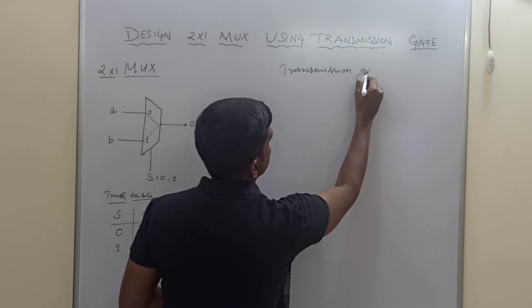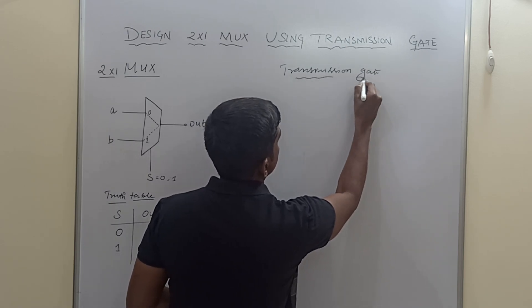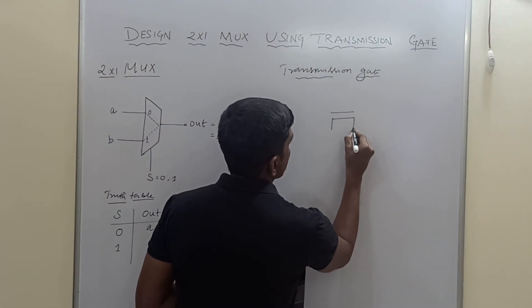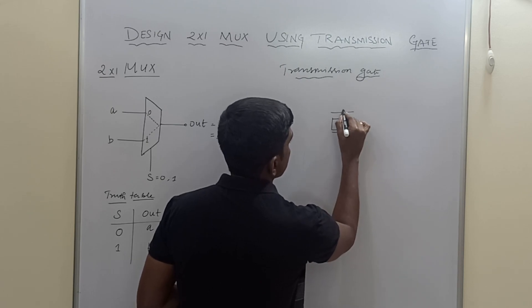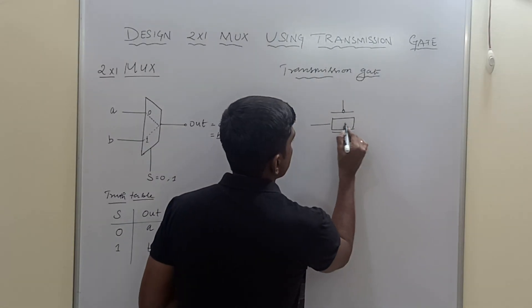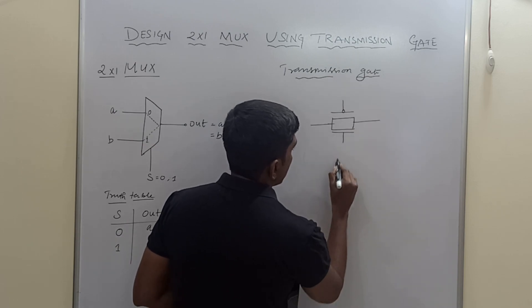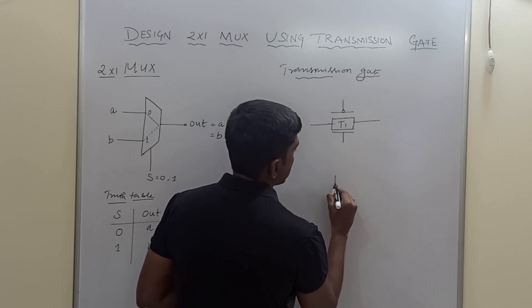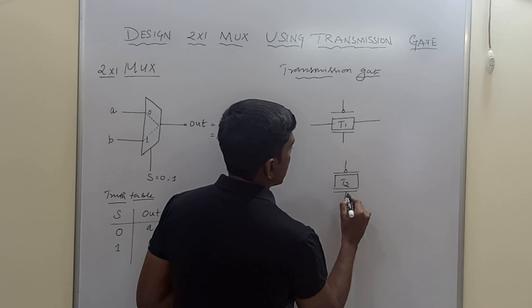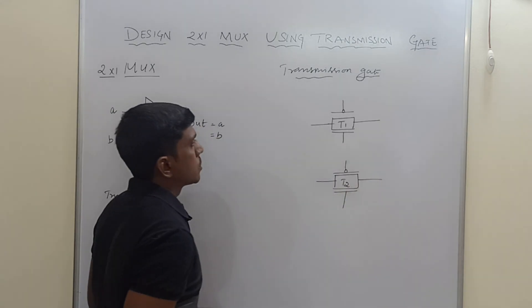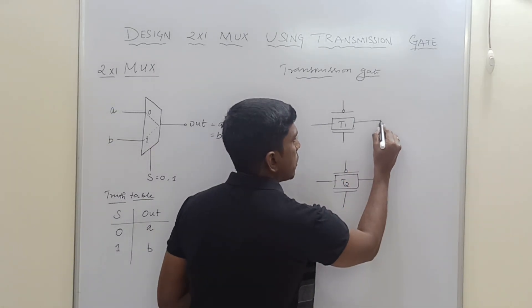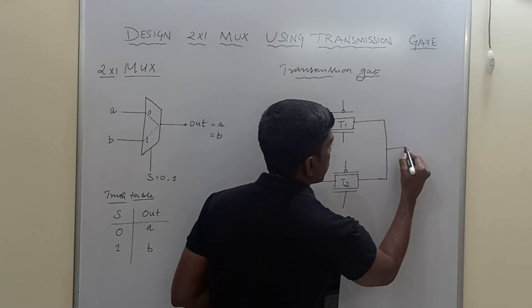For the transmission gate structure, I need two transmission gates. This is the symbol of a transmission gate, where a PMOS transistor and an NMOS transistor are connected in parallel. The first transistor is called T1 and the second is called T2. These two transmission gates each have an output, but since this multiplexer has only one output, we short these two outputs and take one output.